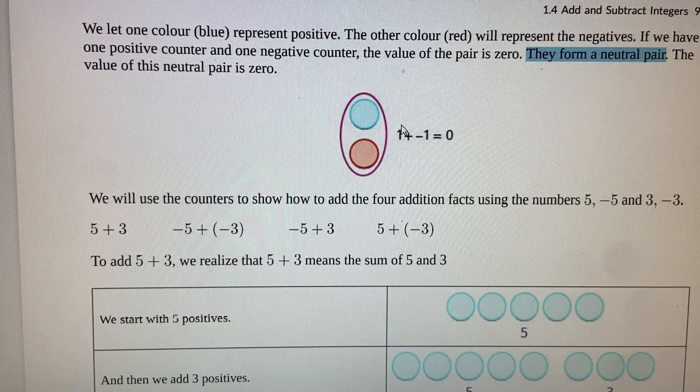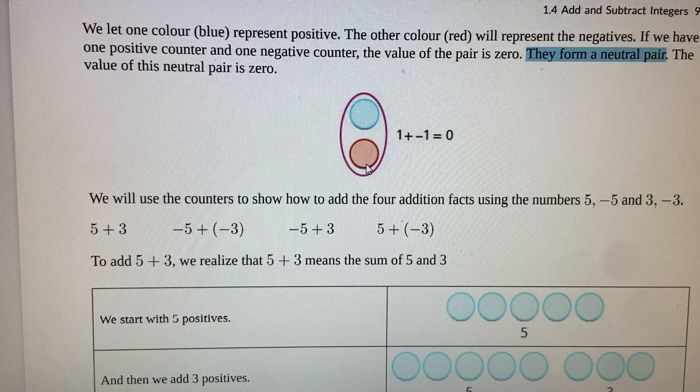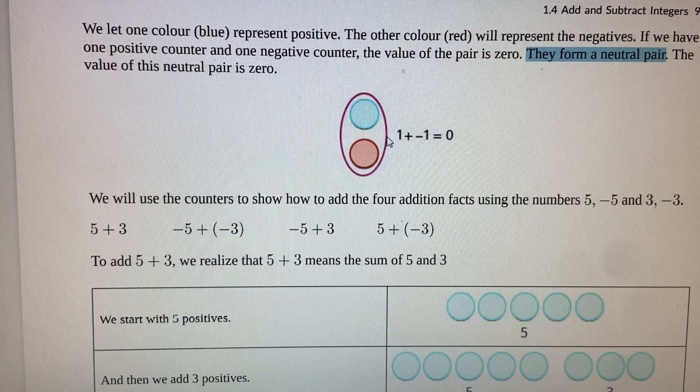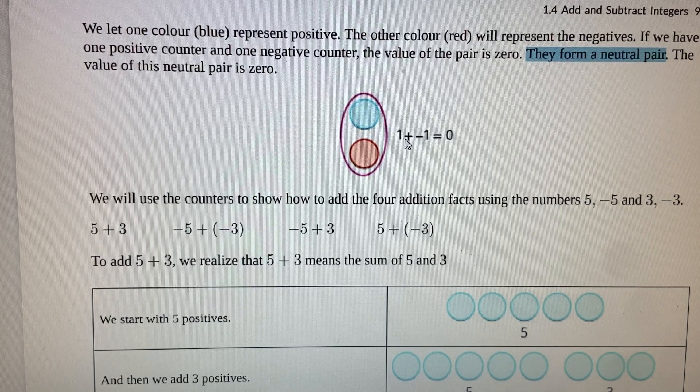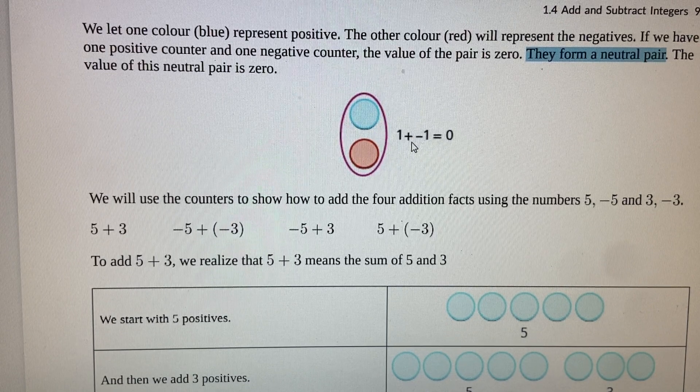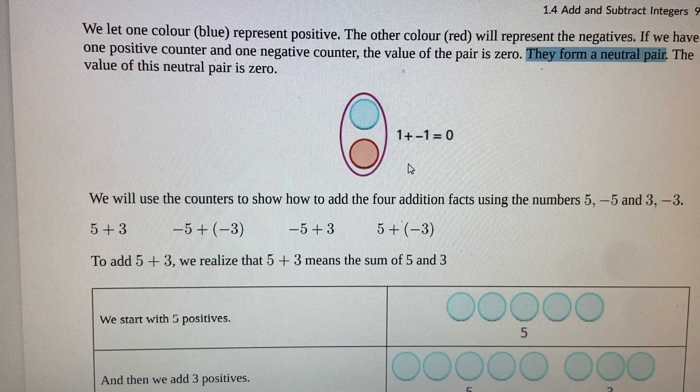So here a positive one, the blue chips are positive and the red ones are negative. They form a neutral pair and their additive sum is zero. They cancel each other out.